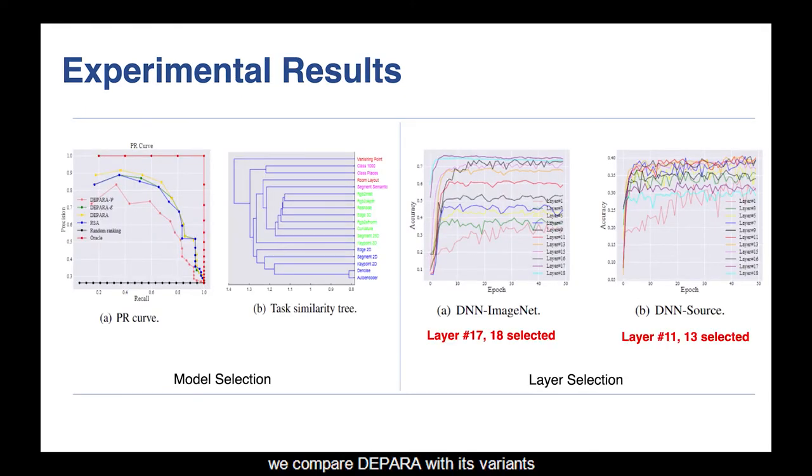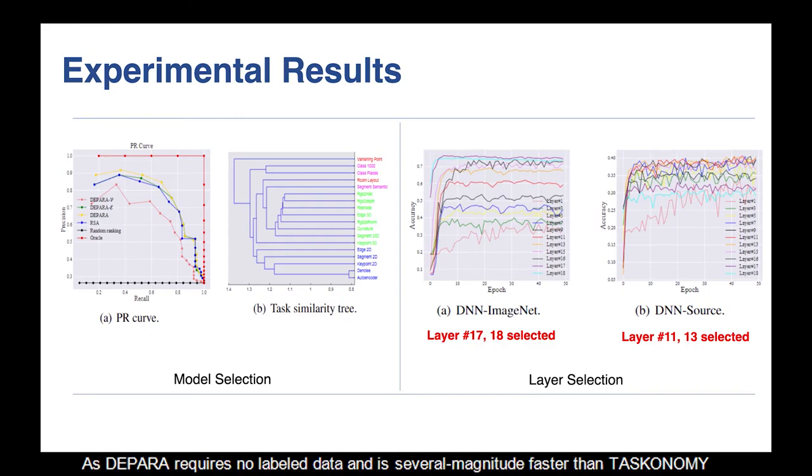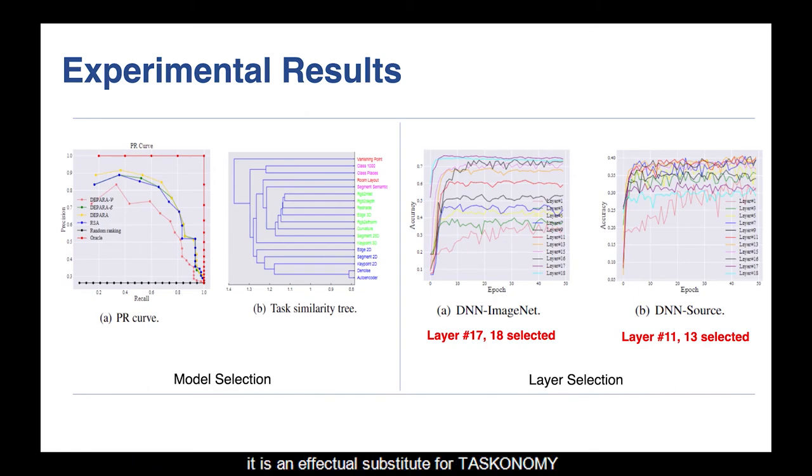For model selection, we compare DeepHara with its variants and the state-of-the-art method, representational similarity analysis. From the precision-recall curve, we can see that our method yields superior performance to these competitors. Furthermore, DeepHara produces highly similar task similarity with Taskonomy. As DeepHara requires no labeled data and is several magnitudes faster than Taskonomy, it is an effective substitute for Taskonomy.